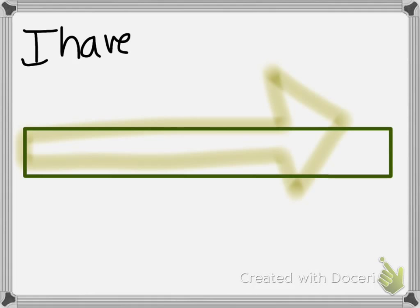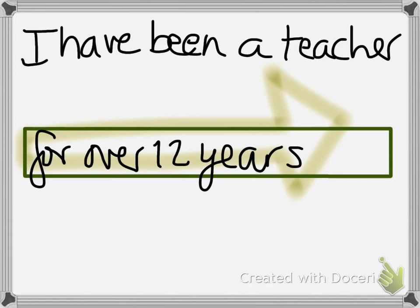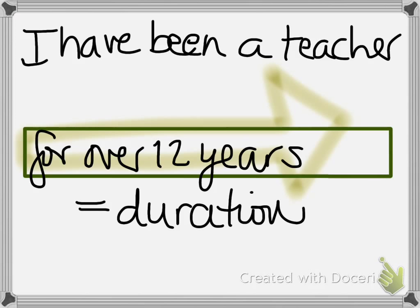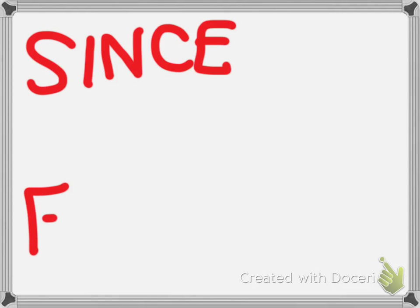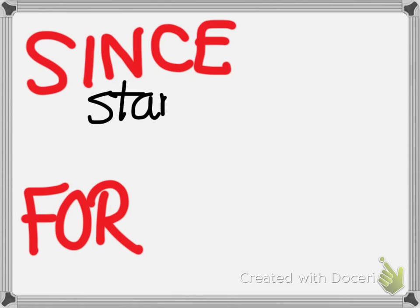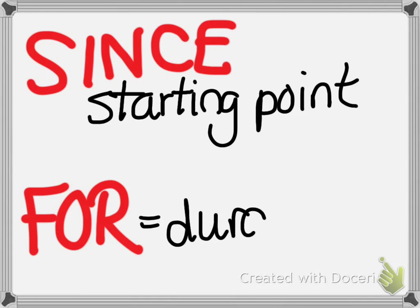In contrast, for talks about how long the thing has been happening for. So remember, that's the difference. Since is when the action began, the starting point of the action. And for talks about how long it has lasted for.